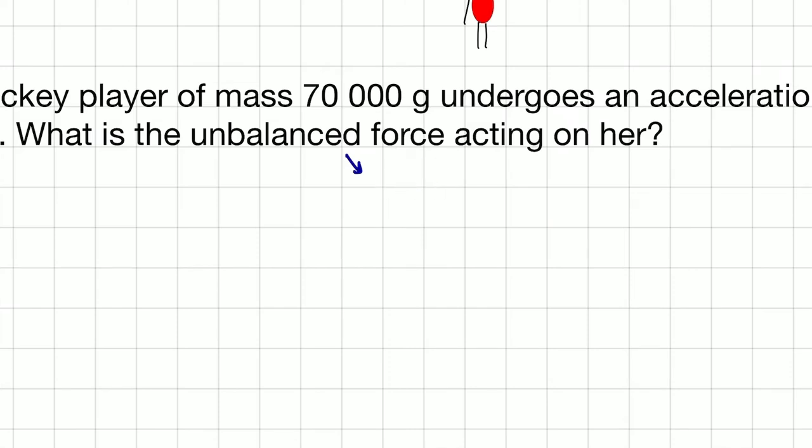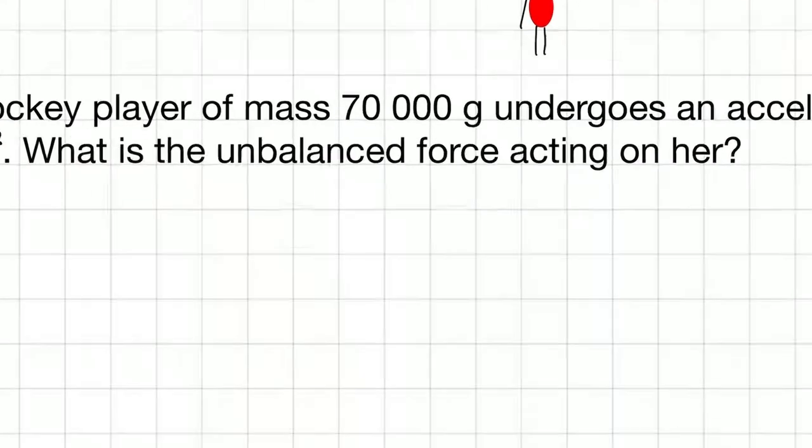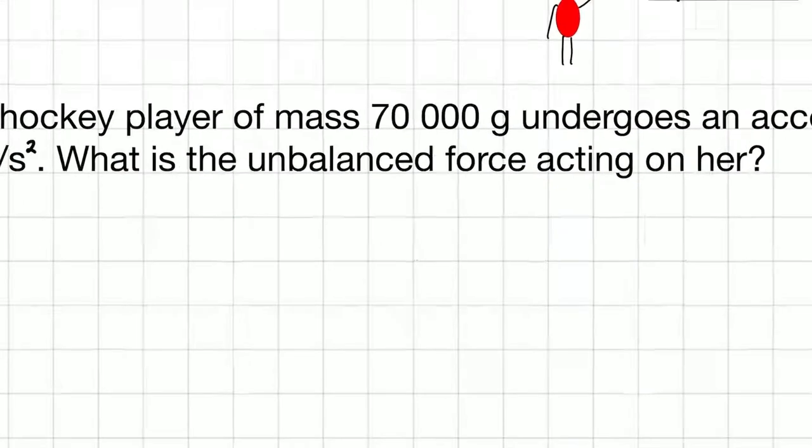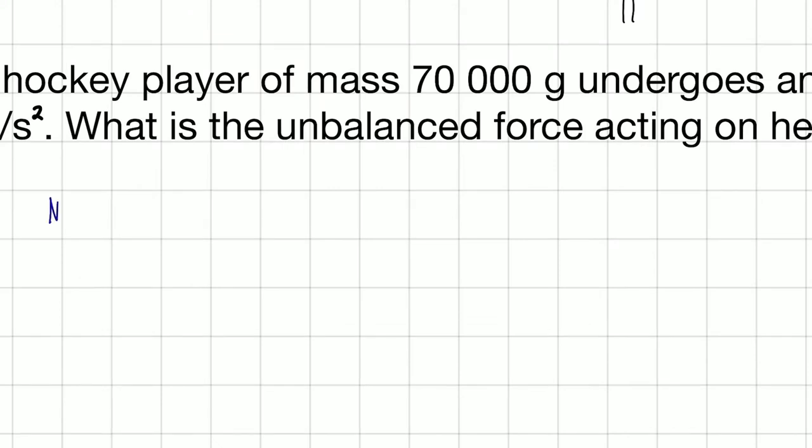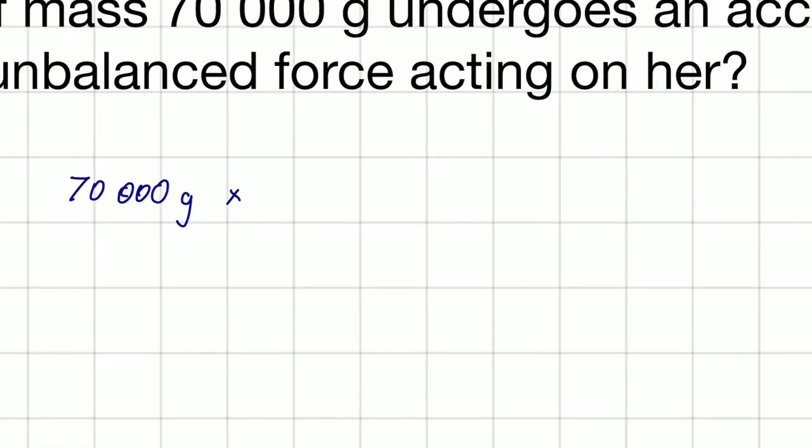The 70,000 grams, since Newtons has a unit of kilogram meters per second squared, we want our mass to be in the units of kilograms. So let's convert 70,000 grams into kilograms. We're going to use a conversion factor. We want kilograms, and we want to divide out grams.